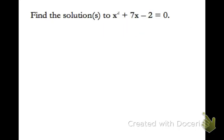Let's start with our first example and solve x² + 7x − 2. Start out by picking out your a, b, and c values. So a is 1 — it's in front of x squared. b is positive 7 — it's in front of x. And c equals negative 2. Make sure you take the negative sign with the number.